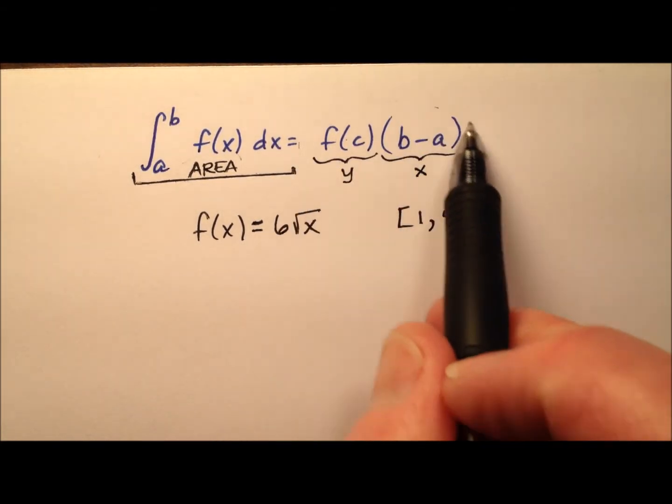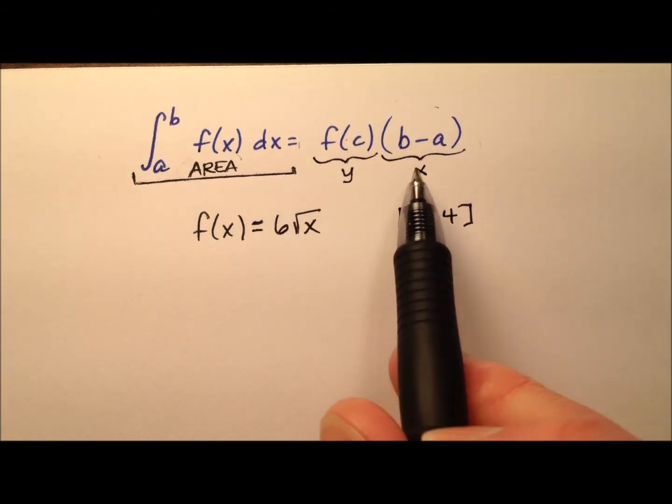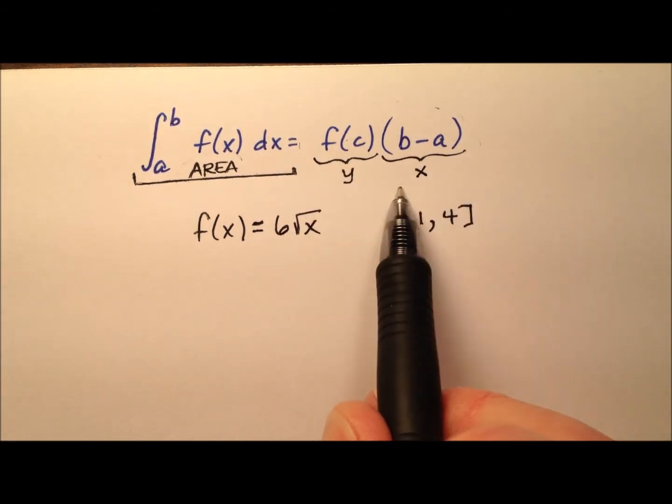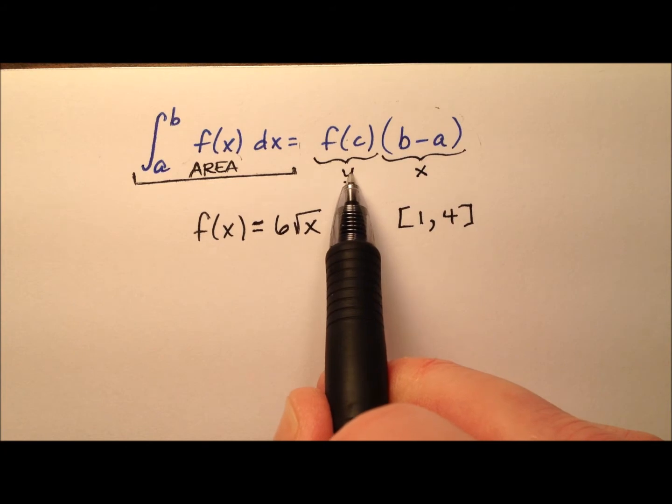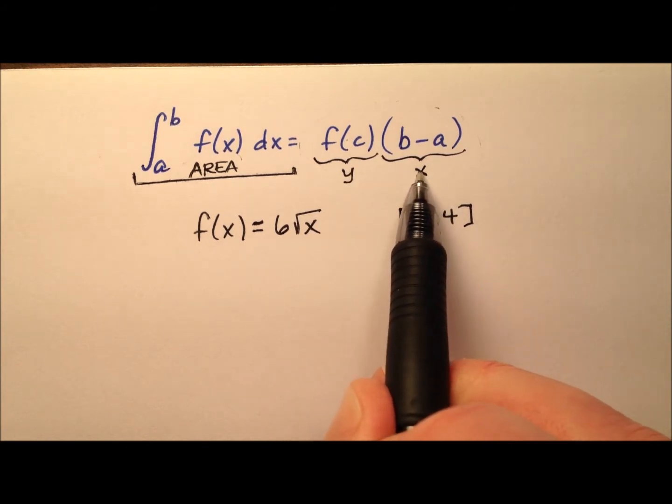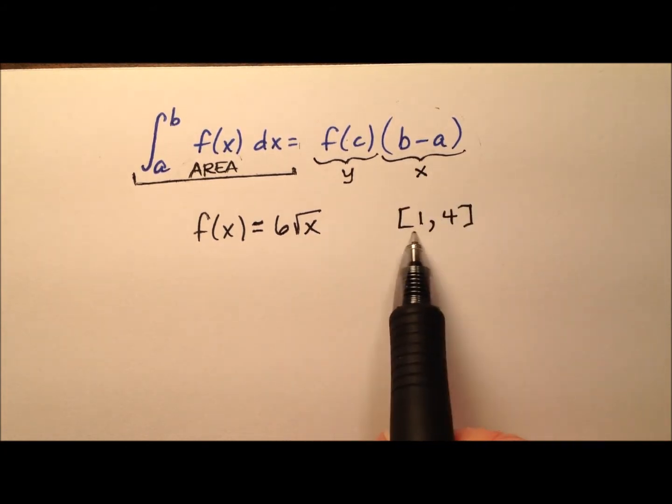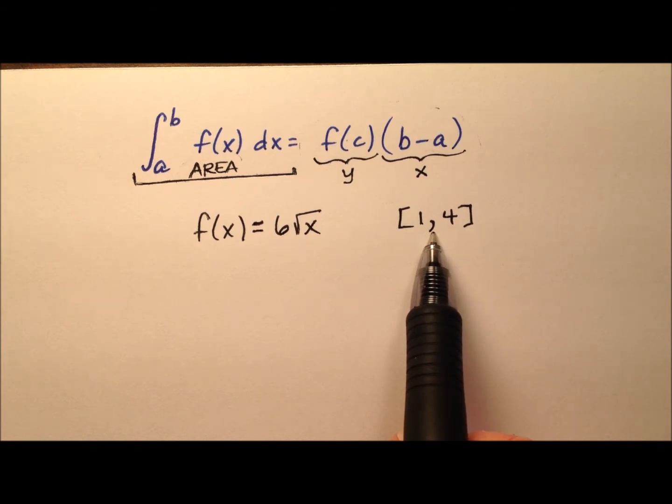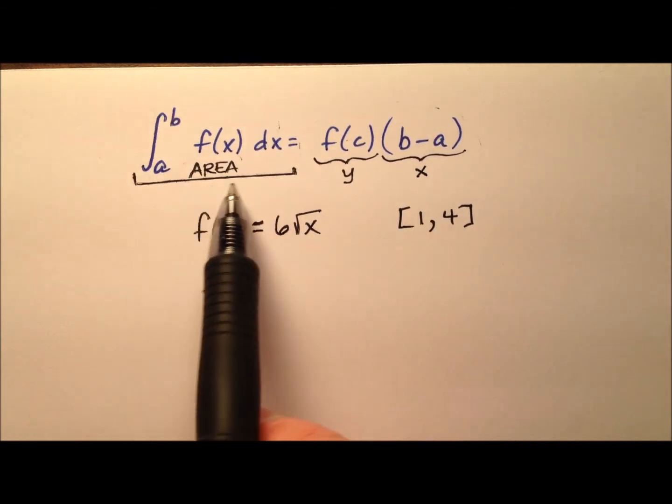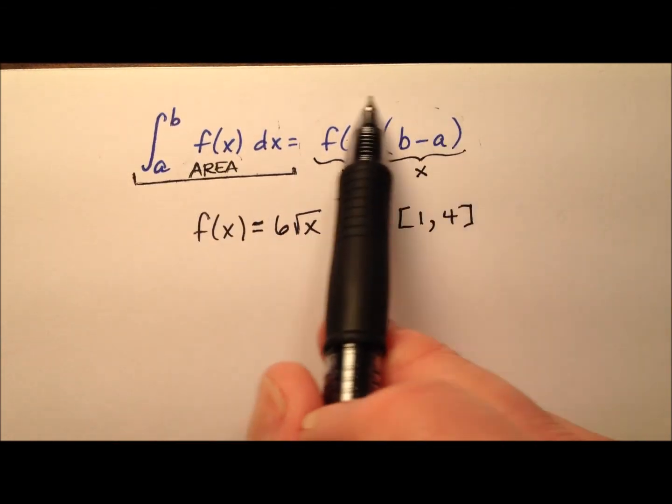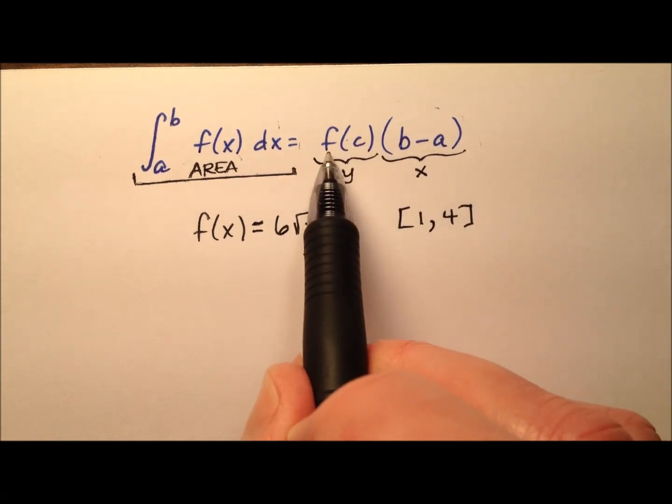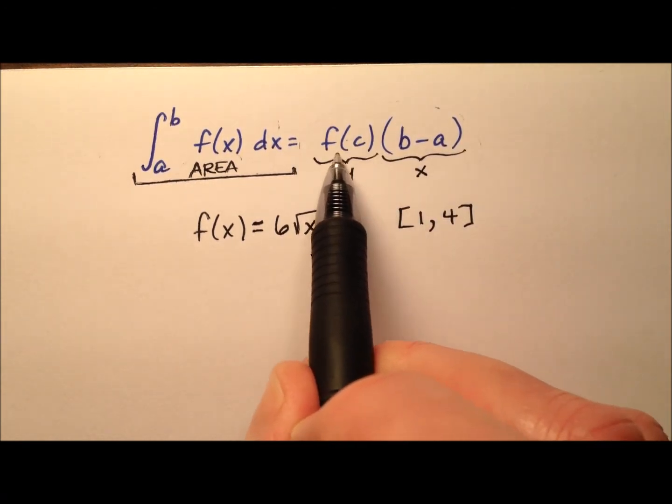It's as if we have this rectangle, where the height is this y value, the width is this x value, which is the width of this interval here. We're going to take this curved region, we're going to smoosh it down into a rectangle, whose height, this f of c, is actually the average value of the function.